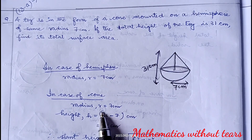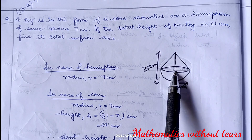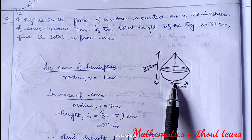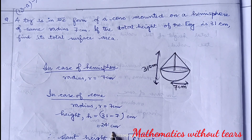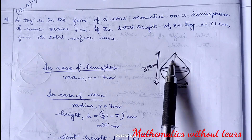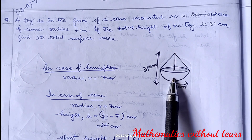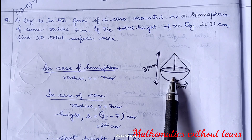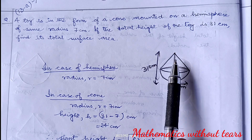In case of cone, radius is 7 centimeter and height will be 31 minus 7, because the hemisphere height is 7, so height of the cone is 31 minus 7, that is 24 centimeter. Since we have to find the total surface area, that means curved surface area of the cone plus curved surface area of the hemisphere.